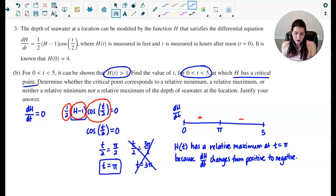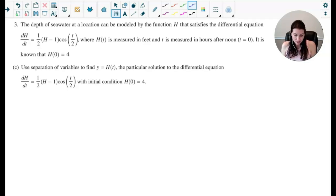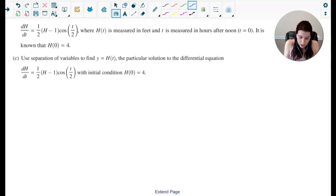Now on to the last part of number three, which is part c, and this is probably where most of the points would come from for this problem. It says use separation of variables to find y equals h(t), the particular solution to the given differential equation, and this is where we're going to use that initial condition that h(0) equals 4. So the first thing we'd have to do is we'd have to separate those variables. To do that I'm going to divide by the quantity (h - 1) and then multiply over the dt. So separating would look like this, and now that I've separated I can now go ahead and integrate both sides.